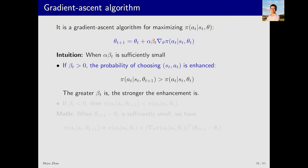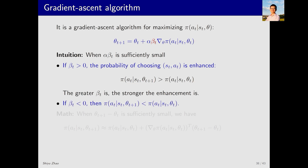Assuming both alpha and beta_t are small, we can draw two conclusions. First, if beta_t > 0, then pi(a_t | s_t; theta_{t+1}) > pi(a_t | s_t; theta_t) — the new theta increases pi(a_t | s_t), with a larger step size giving a larger increase. Second, if beta_t < 0, this corresponds to gradient descent and the new theta decreases pi(a_t | s_t).